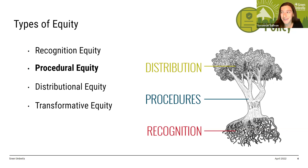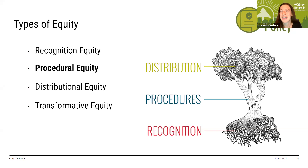Next is procedural equity, which is addressing power structures and access to participation and decision-making. A key to this is ensuring inclusive and meaningful engagement and asking how our engagement actually shifts power, builds trust, and ensures accountability, both structurally and intergenerationally. The distributional equity component — the leaves of our tree — is about how we address the actual distribution of burdens and benefits across different populations. This means asking what are the projects and programs we're creating, what policies are we implementing, and do they include the mechanisms to address outcomes to achieve equity?